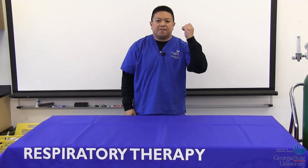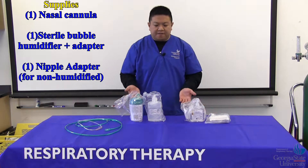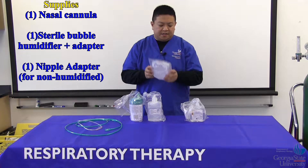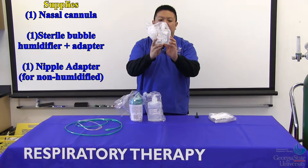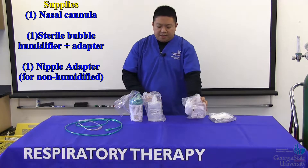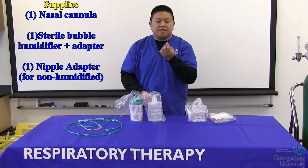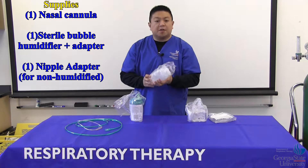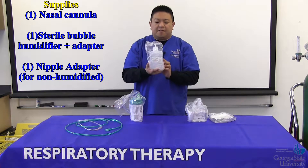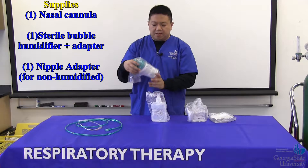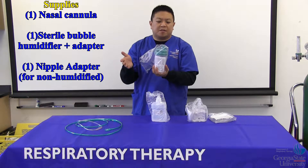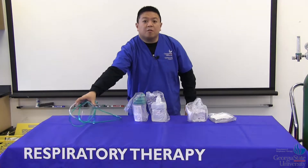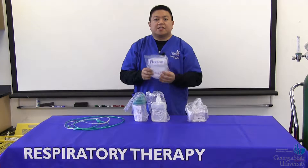Let's head to the supply closet to grab our stuff. You're going to need one simple nasal cannula package, one sterile water package with assorted flow meter adapter, and you may need an oxygen flow meter nipple adapter. Some hospitals use different devices — a separate sterile water you can pour into a reusable per-patient-use bubble humidifier, and higher-flow simple nasal cannulas. For this video, we'll focus on the standard simple nasal cannula.